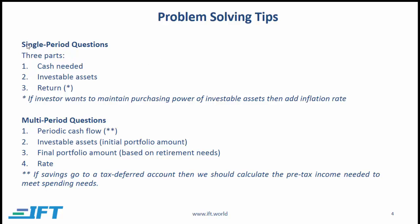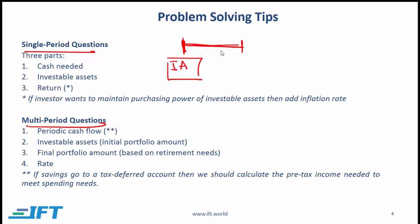With single period questions, you have a particular portfolio — also called the investable assets. There is a spending requirement or need requirement for the year, and then you need to calculate a return. The cash needed is the spending requirement over the year. The investable assets are the assets at the start of the year, and based on those and the spending requirement, we calculate the required return.